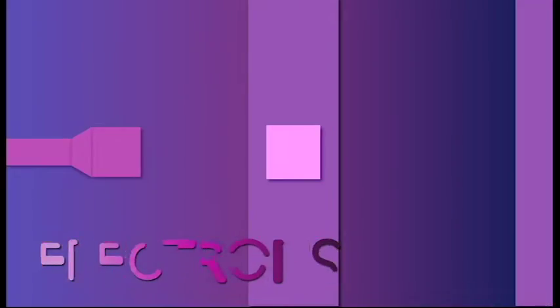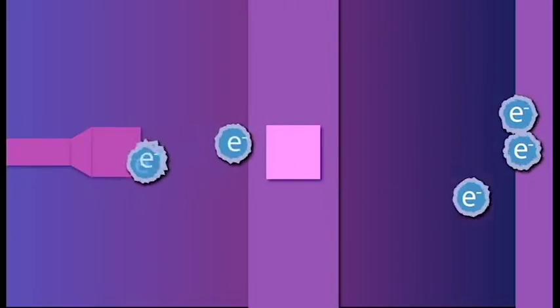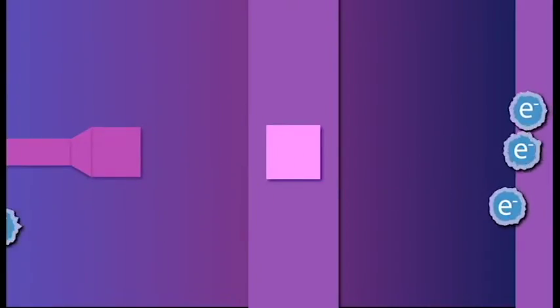Here we have a single-slit experiment with an electron gun, a slit, and a back wall. As you can expect, the electrons that pass through the slit hit the back wall, and those that don't simply bounce off.